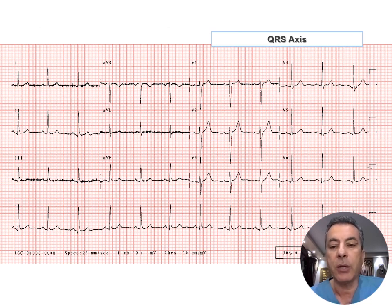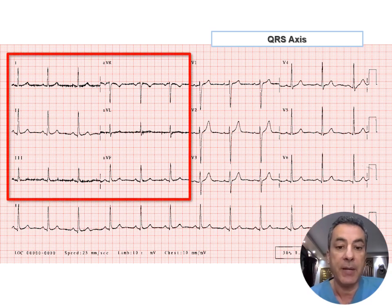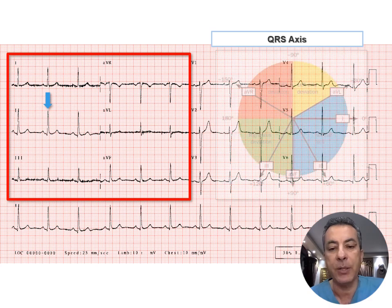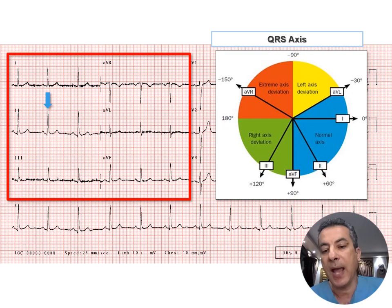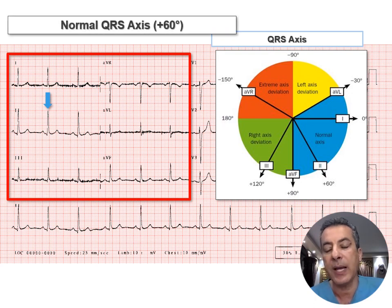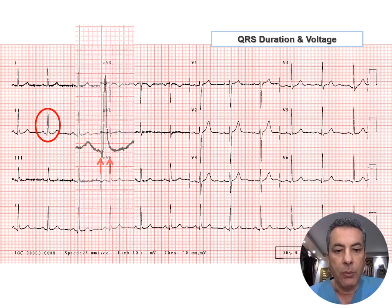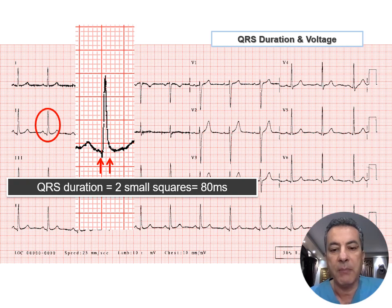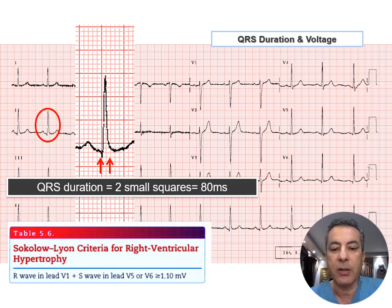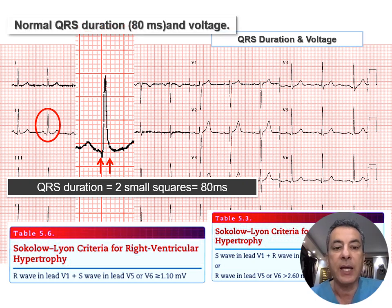Regarding the QRS axis, we check the frontal limb leads. Lead II has the highest R wave amplitude, and from the hexaxial diagram the axis of lead II is plus 60 degrees, so the mean frontal QRS axis is plus 60 degrees, which is normal. For QRS duration and voltage, the widest QRS measures 2 small squares — 80 milliseconds — which is less than 100 milliseconds, meaning QRS duration is normal. No Sokolow-Lyon criteria for right or left ventricular hypertrophy are identified, so voltage is normal.